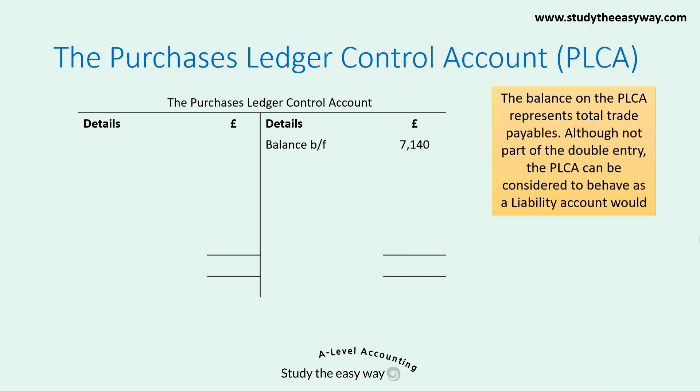Let's start by looking at the purchase ledger control account, shown here as a T account. The balance on the purchase ledger control account represents total trade payables — in other words, the total amount owed to suppliers. Although the control account is not part of the double entry, it can be considered to behave as a liability account would, and therefore the balance is on the credit side. Other items that increase the liability balance are shown on the credit side too, including credit purchases, returned cheques, and interest charged by suppliers.